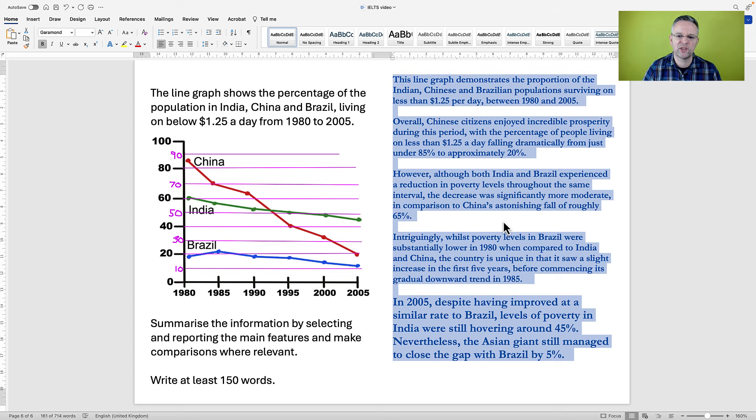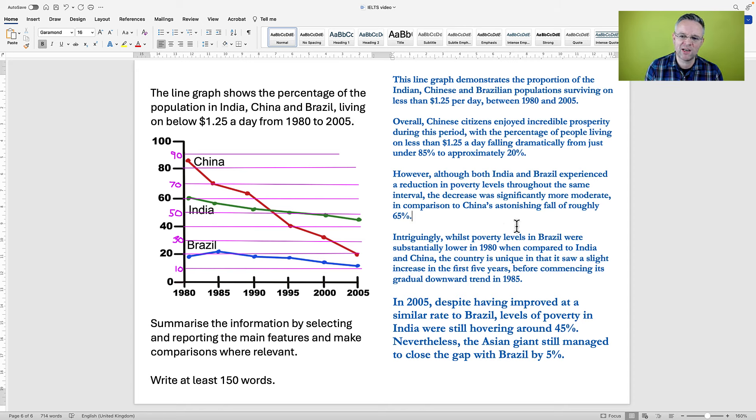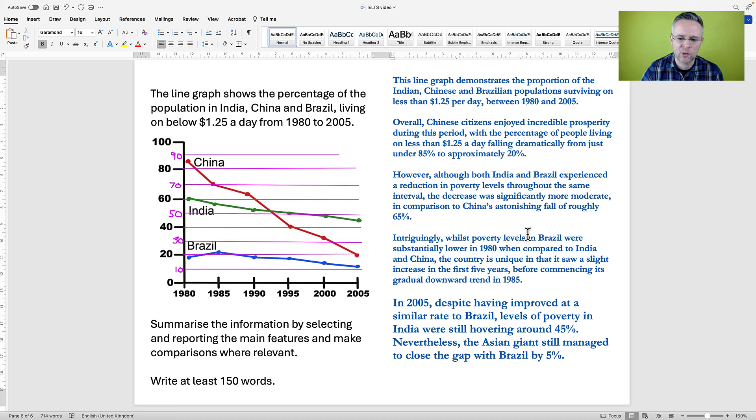Now, I'll give this one last read and check for mistakes. This line graph demonstrates the proportion of Indian, Chinese and Brazilian populations surviving on less than $1.25 per day between 1980 and 2005. Overall, Chinese citizens enjoyed incredible prosperity during this period, with the percentage of people living on less than $1.25 a day falling dramatically from just under 85% to 20%. However, although both India and Brazil experienced a reduction in poverty levels throughout the same interval, the decrease was significantly more moderate in comparison to China's astonishing fall of roughly 65%. There's another word which means about or approximately. Intriguingly, whilst poverty levels in Brazil were substantially lower in 1980 when compared to India and China, the country is unique in that it saw a slight increase in the first five years before commencing its gradual downward trend in 1985. Commencing, fantastic word, means beginning or starting, but is fancier.